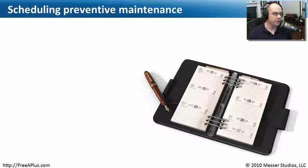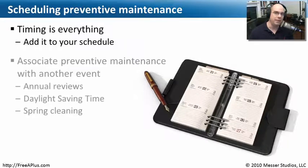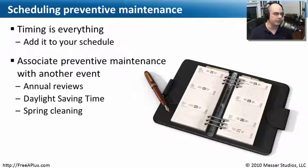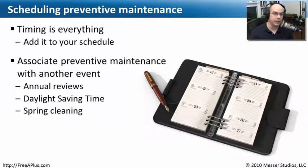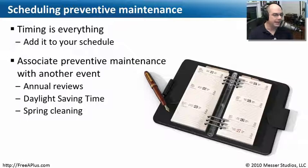One of the first steps you can do is to schedule preventive maintenance for your computer. Get it on your calendar so that you know exactly when it's going to happen. You may even want to have it revolve around a particular day — maybe at a certain time of the year, when your clock changes for daylight saving time, or around spring cleaning or winter time. In any case, have something that's always scheduled and available.